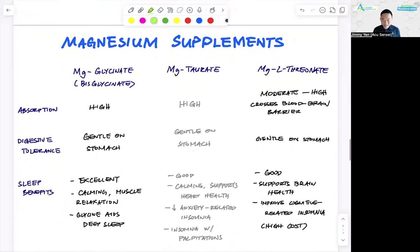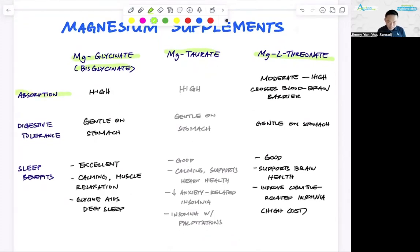So magnesium supplements, there's many types of magnesium. Which one is the best one for you? That's the number one question you tuned in for. Let me first start off by there's three main ones that can help with insomnia. One is magnesium glycinate, also called bisglycinate. Magnesium taurate is number two and magnesium L-threonate. These are the three main forms of magnesium supplements that can help you with your sleep if you're having problems with sleep.